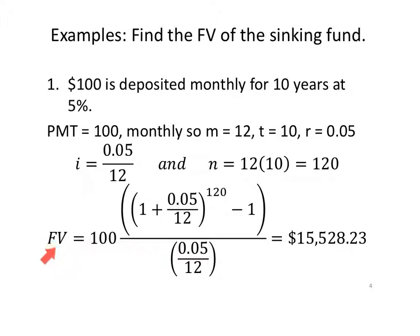We'll put everything in our formula. FV equals 100 times parentheses twice, 1 plus 0.05 over 12, close the parentheses to the power of 120. Make sure you come out of the exponent before you type the minus 1. Close your parentheses ending the numerator, divide by i. Let the calculator do the work and you'll find that in 10 years, you'll have $15,528.23.